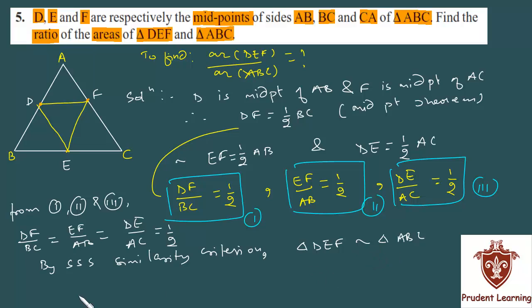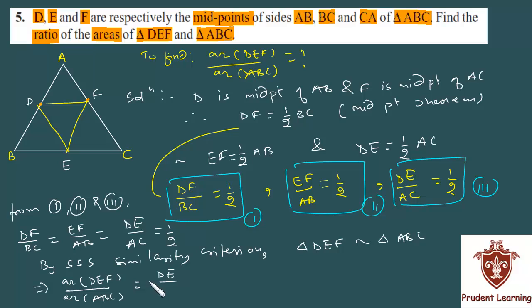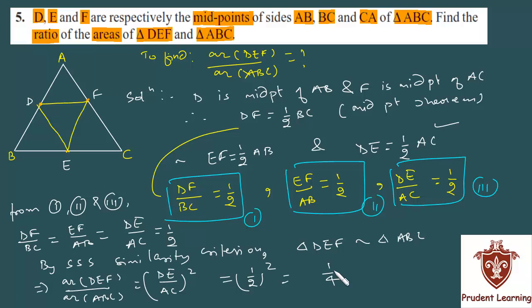If two triangles are similar, the ratio of their areas equals the square of the ratio of their corresponding sides. Area of DEF / Area of ABC = (DE/AC)². Now DE/AC = 1/2 from equation 3, so (1/2)² = 1/4. So finally your answer is 1:4.